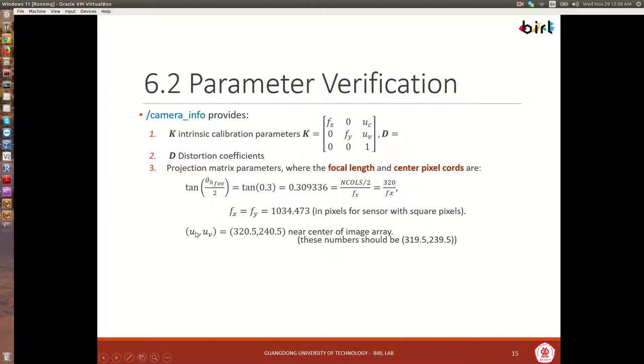So this is saying that the focal length x, which is going to be equal to the focal length of y, is equal to 1034.473. And this is in pixels for a sensor with square pixels. And then we're going to see this topic that uc and uv are set to 320.5 and 240.5. Actually, these numbers are wrong. They should be 319.5 and 239.5. Why is that? Because we're going from 0 to the number of columns minus 1. So that's 640 minus 1 from 0 to 639. And so that middle point is actually going to be 319.5, not 320.5. This is a bug in our simulation plugin.